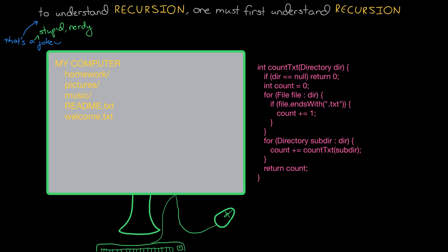So in this case what happens is the following. We first call my computer and ask my computer how many .txt files do you have? It says well I have two in my immediate folder, but then in order to get my final answer I need to go ask homework, pictures, and music. So first we go ask homework and we say homework how many files do you have and that's what's called recursing.